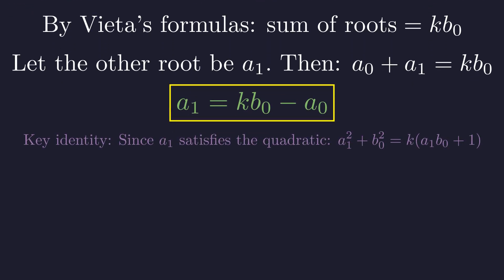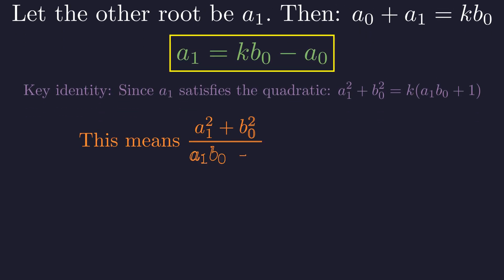Crucially, since a1 satisfies our quadratic equation, we have the identity a1 squared plus b0 squared equals k times the quantity (a1 times b0 plus 1). This means the pair a1, b0 also yields the same integer k. Since k was assumed to be non-square for a0, b0, it remains non-square for a1, b0.